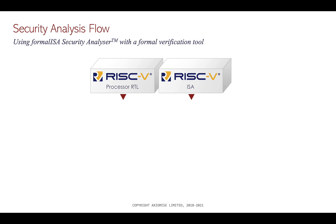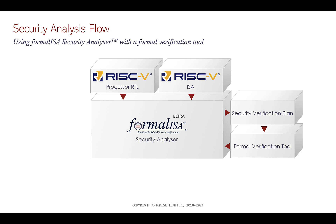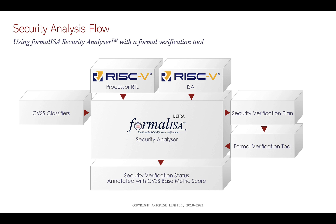Let's describe what a security analysis flow is. Here is a RISC-V processor — we take in the RISC-V ISA, look at the security concerns, and build a security analyzer. We've built an app that creates a security verification plan by looking at the architectural specification of RISC-V and automatically building the plan. It then gets executed in a formal verification tool which runs the checks specified in the verification plan. We use CVSS classifiers in our app to annotate the security verification plan and provide the final status annotated with the CVSS base metric score.